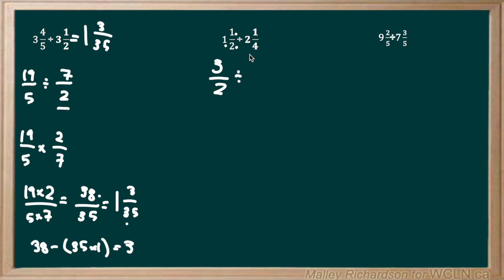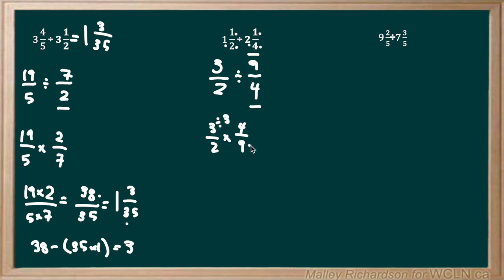Now we convert 2 and 1/4: the denominator stays at 4, and the numerator is 4 times 2 plus 1. 4 times 2 is 8, and 8 plus 1 is 9, so we get 9/4. Division means multiplying by the reciprocal of 9/4, so we have 3/2 multiplied by 4/9. We can cancel diagonally: 3 and 9 both divide by 3, and 2 and 4 both divide by 2, giving us 1/1 times 2/3. Our final answer is 2/3.